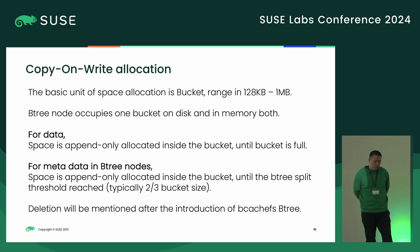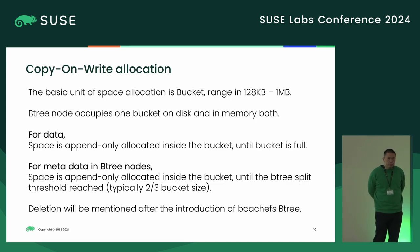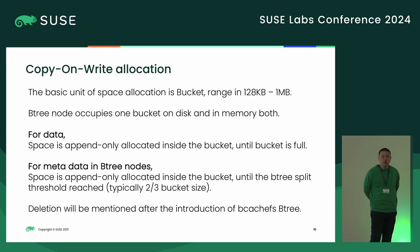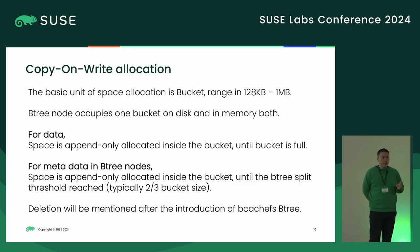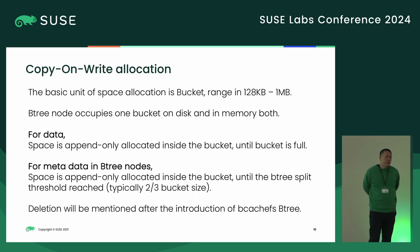Now I will talk about copy-on-write allocation. The basic unit for BcacheFS to allocate space is a bucket. BcacheFS allocates metadata — the B-tree node — and data, all in bucket-sized units. The bucket size normally ranges from 128 KB to 2 MB, so the B-tree node in BcacheFS is quite large.